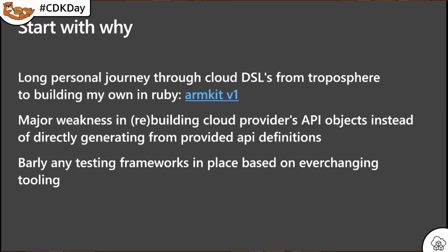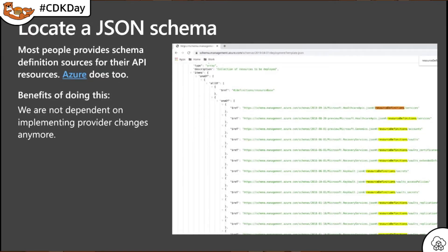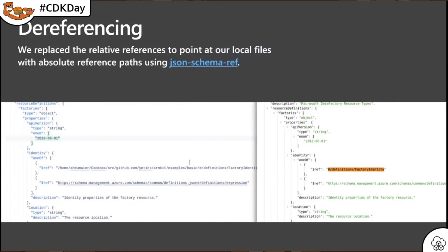I want to outline in a few slides the principles to get going and what we learned so far. So where to start? We start with the JSON schema. Most providers have one where they describe their API resource objects. Let's take a look. Here we see an example of the Azure schema route — all services and resources with their different versions are cross-referenced in sub-documents from here. And this is the source of truth we need to build our CDK code on. Once we have the resource schemas located, the next step was unifying the scattered pieces with all the relative and absolute references as one, using JSON schema ref.